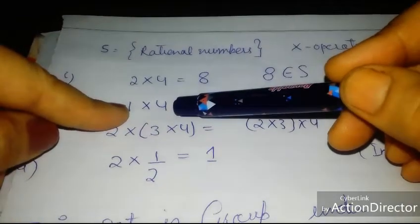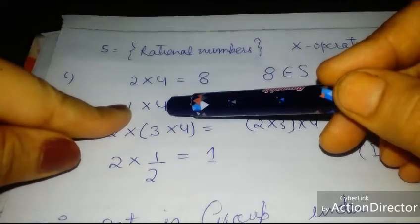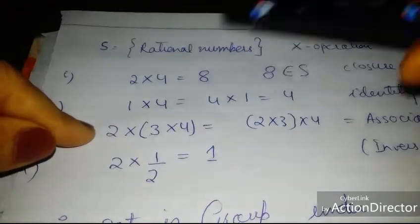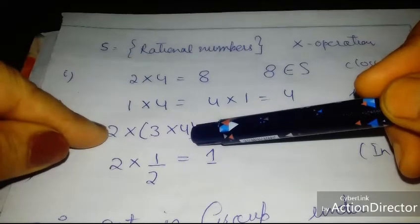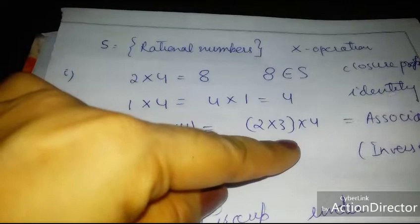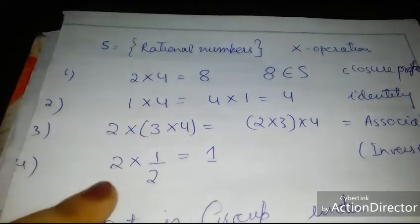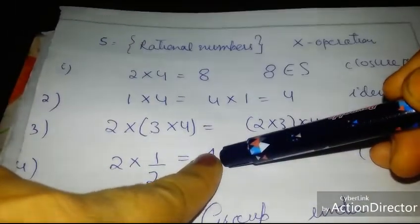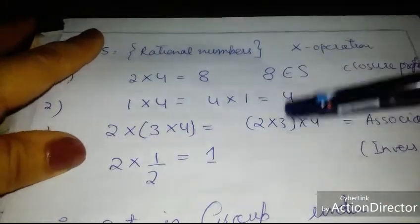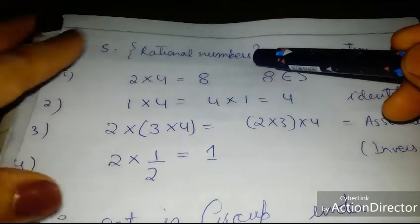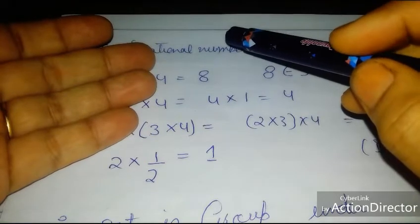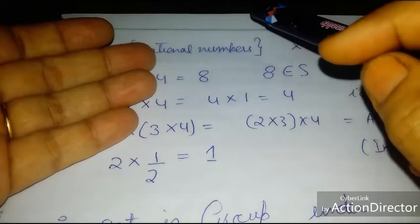The second property is identity: multiply any number by 1 (the identity) and you get the same number back — for example, 4 × 1 = 4. Third is associativity: a × (b × c) = (a × b) × c, the same result either way. Fourth is the inverse property: multiplying a number by its inverse gives 1, the identity. Since this set satisfies all four fundamental properties — closure, associativity, identity, and inverse — it is a group under multiplication.